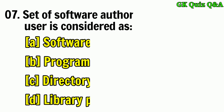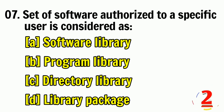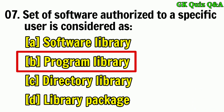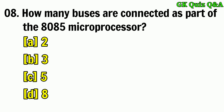Set of software authorized to a specific user is considered as — Answer B: Program Library. How many buses are connected as part of the 8085 microprocessor?